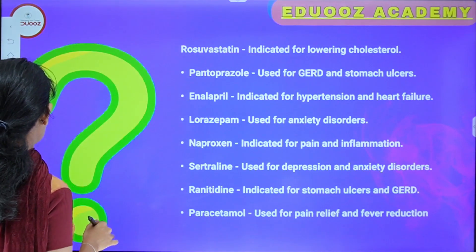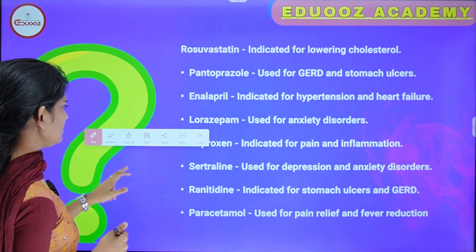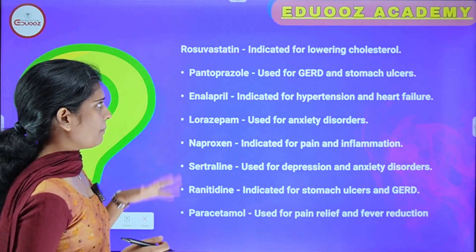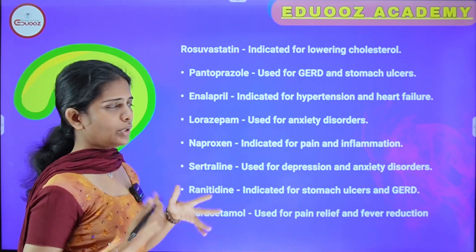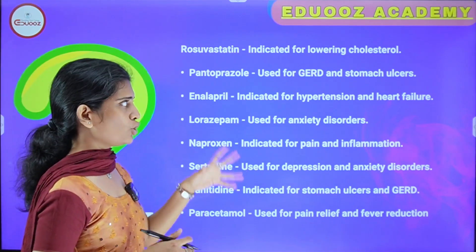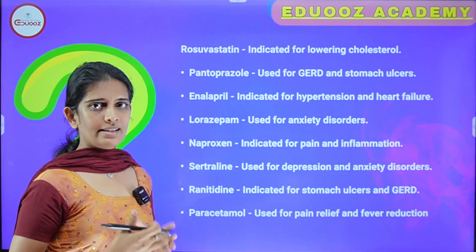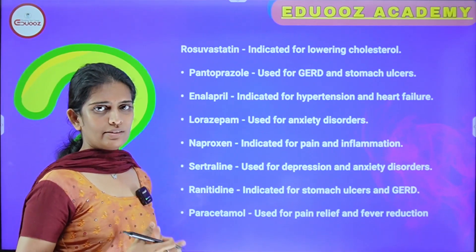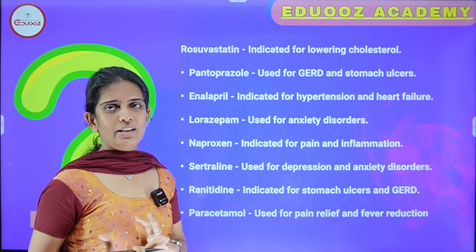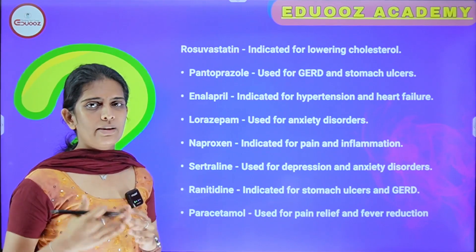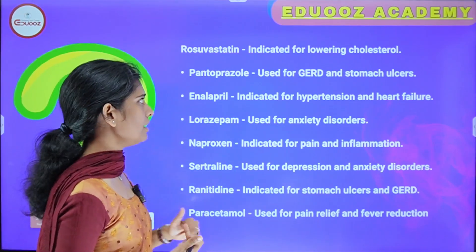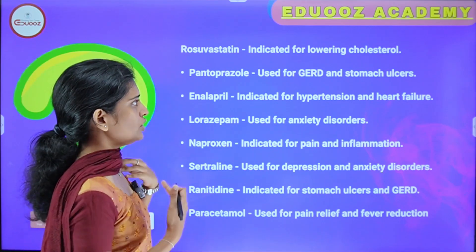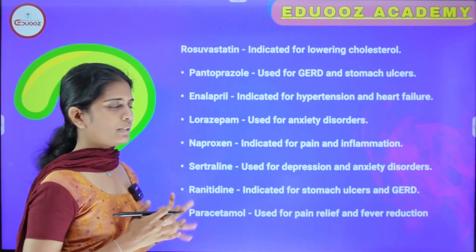Rosuvastatin is a statin indicated for lowering cholesterol. Pantoprazole is used for gastroesophageal reflux disease and stomach ulcers. It works on the gastrointestinal tract stomach lining via proton pump H+/K+ ATPase inhibition. Pantoprazole or Omeprazole is also used for GERD and stomach ulcers.